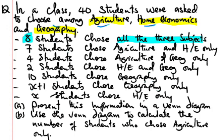We were told that 7 students chose Agriculture and Home Economics. 4 students chose Agriculture and Geography only. 2 students chose Home Economics and Geography only.